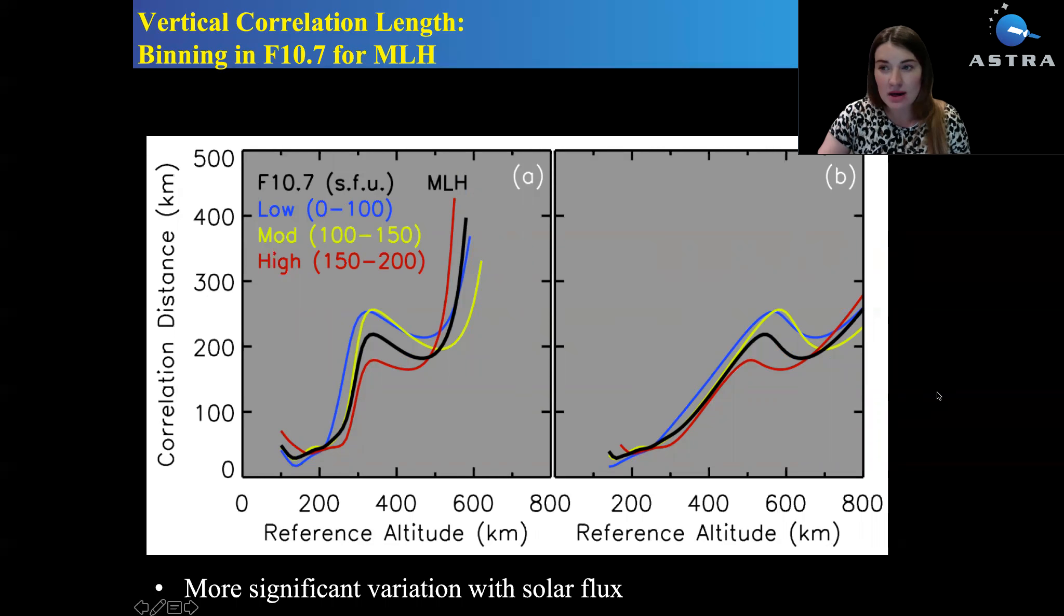For the binning in solar flux, the situation is a little bit different. If we bin the data in low, moderate or high solar flux, then the differences between, let's say, high solar flux and low or moderate solar flux is quite large in terms of the correlation distance, about 100 kilometers. For the modeling purposes, it's worth having data binned also in the solar flux.